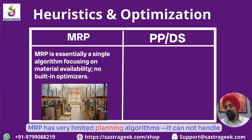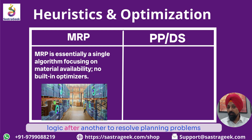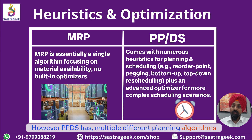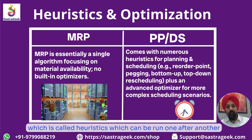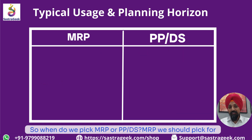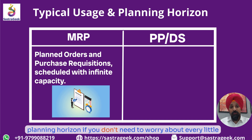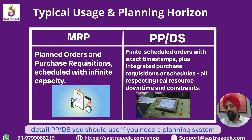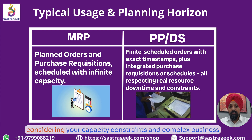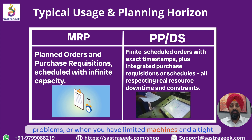MRP has very limited planning algorithms and cannot handle complex planning situations where you need to apply one logic after another to resolve planning problems. However, PPDS has multiple different planning algorithms — called heuristics — which can be run one after another to fix complex planning situations. So when do we pick MRP or PPDS? Use MRP for straightforward repetitive manufacturing with a shorter planning horizon when you don't need to worry about every little detail. Use PPDS when you need a detailed production schedule considering capacity constraints and complex business problems, or when you have limited machines and a tight timeline.